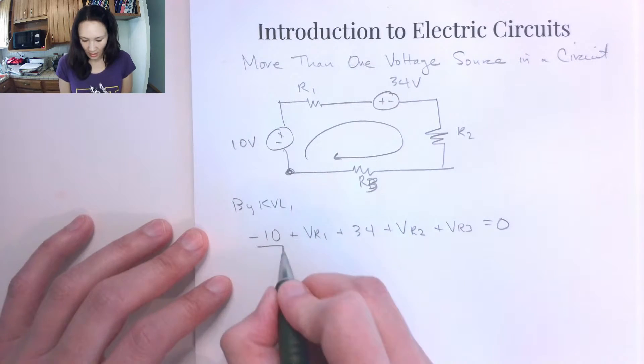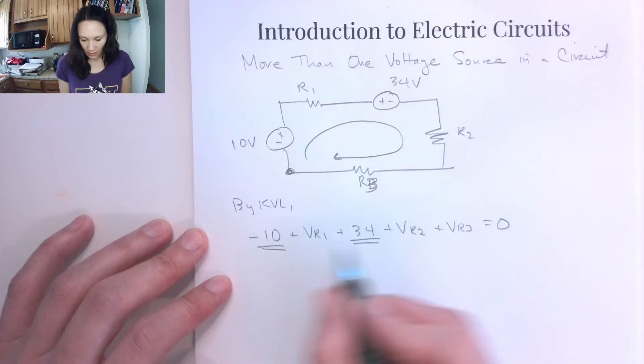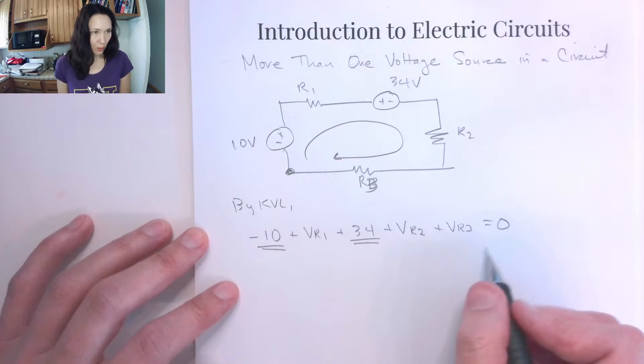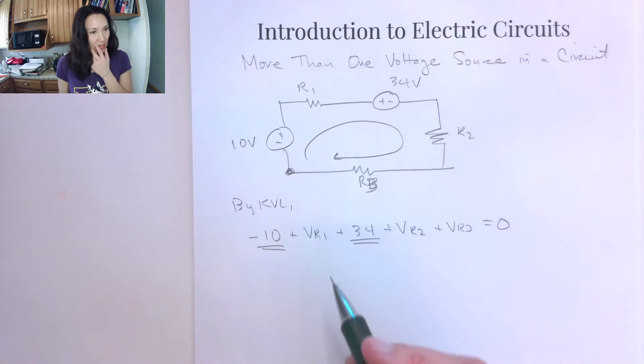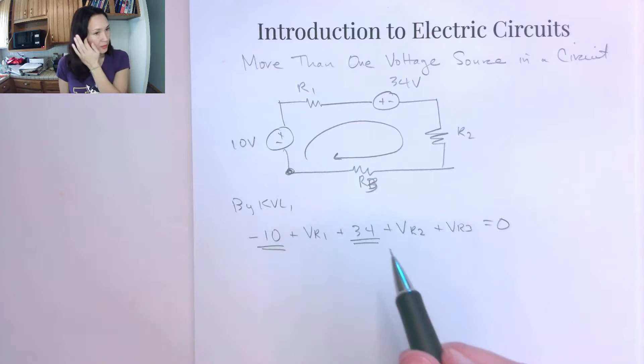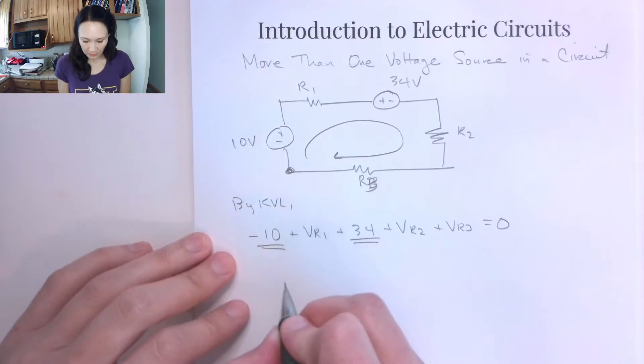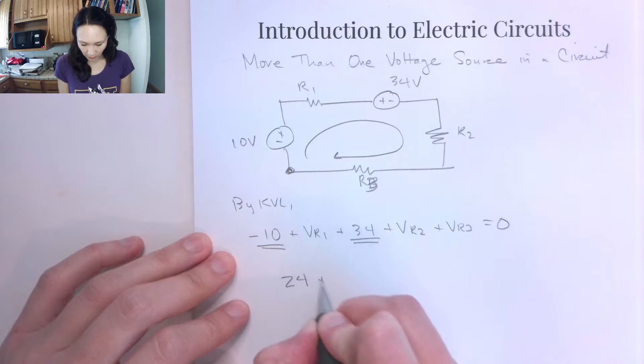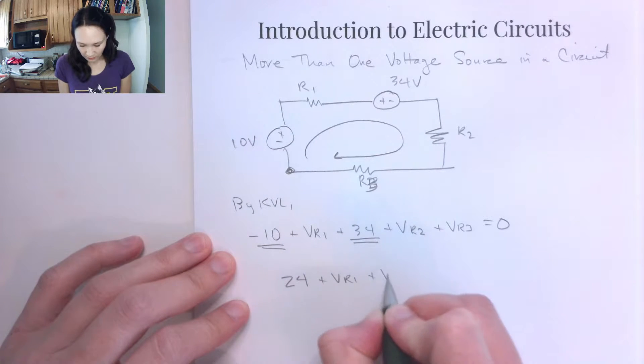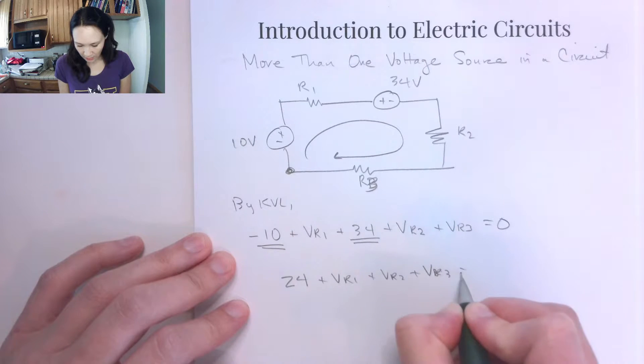So I have these constant values in my KVL equation due to these voltage sources, and it turns out that these are just going to combine to give us 24 plus VR1 plus VR2 plus VR3, right?